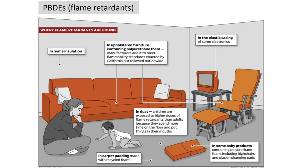Flame retardants — PBDEs — are in almost everything in your home. This shows all the different PBDEs that exist just in your home: in plastic, upholstered furniture with polyurethane foam, home insulation, dust. Children are actually exposed more than adults because they spend more time on the floor and put things in their mouths. PBDEs are also found in carpet padding and some baby products.